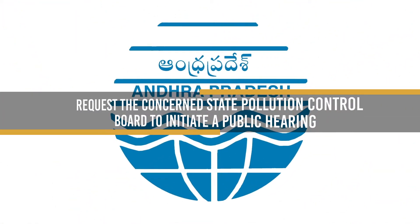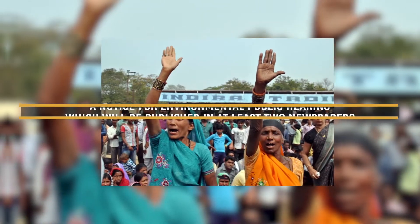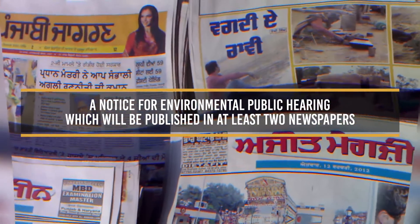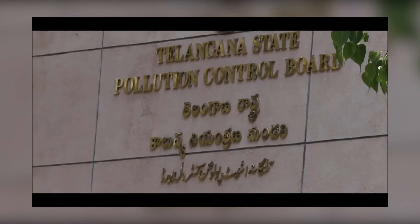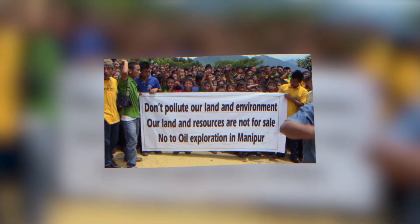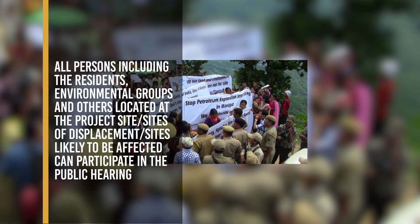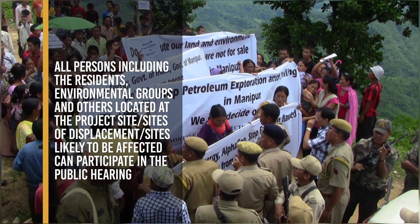Procedure for Public Hearing — Notice of Public Hearing: whoever applies for environmental clearance of projects should request the concerned State Pollution Control Board to initiate a public hearing. The State Pollution Control Board issues a notice for the environmental public hearing, which will be published in at least two newspapers widely circulated in the region around the project, one of which will be in the vernacular language of the locality. The State Pollution Control Board mentions the date, time, and place of the public hearing. Suggestions, views, comments and objections of the public will be invited within 30 days from the date of publication of the notification. All persons including residents, environmental groups and others located at the project site, sites of displacement, or sites likely to be affected can participate in the public hearing.